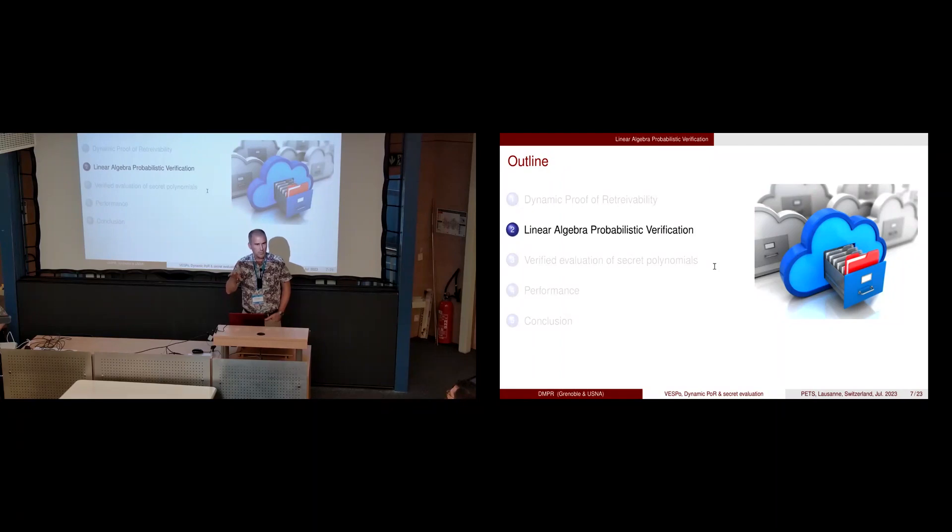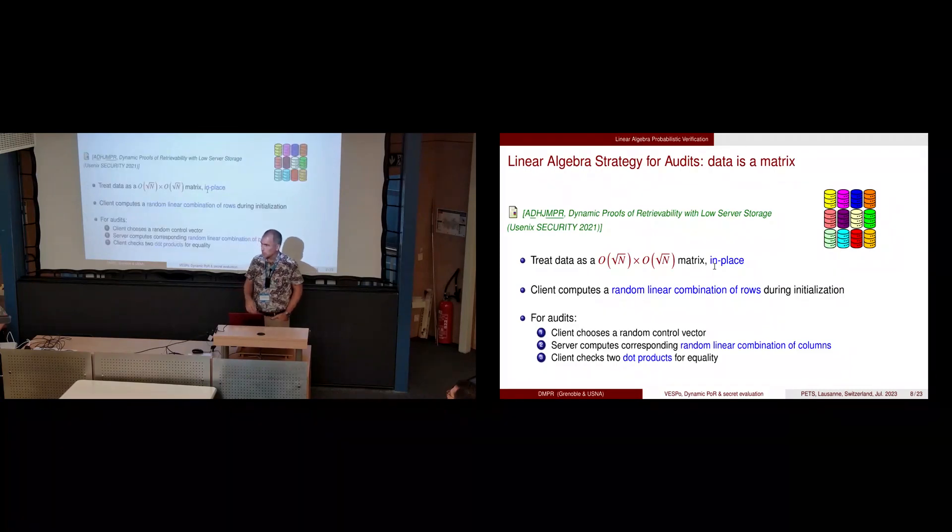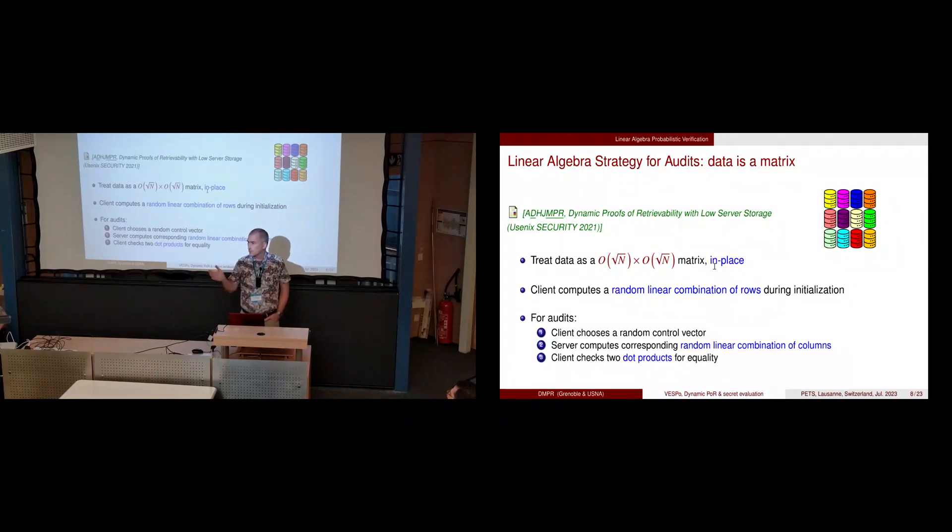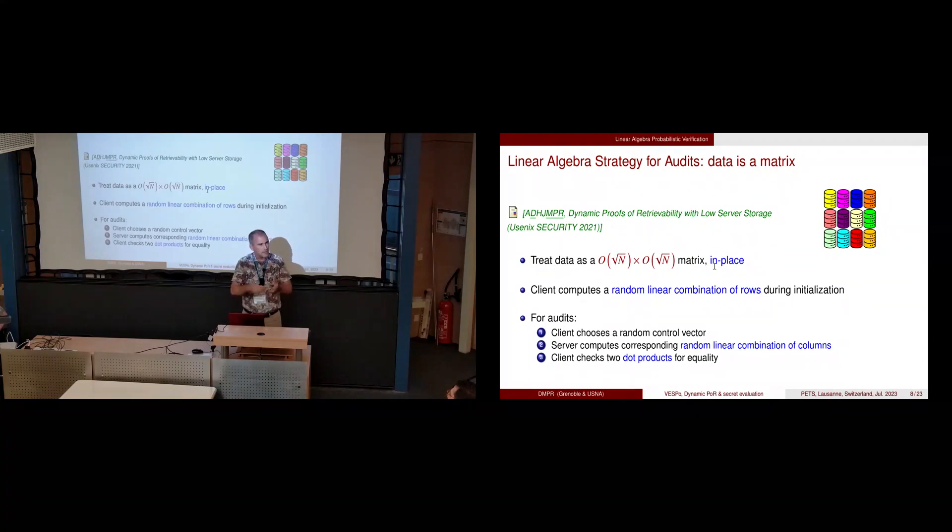We use another solution where the data is as small as possible, meaning we don't have any redundancy at all. The way we do this is to do some computations with the data. We treat the data as a matrix and do matrix vector products and dot products on this data to check that the result is correct and therefore that the data is not modified.